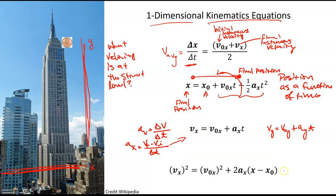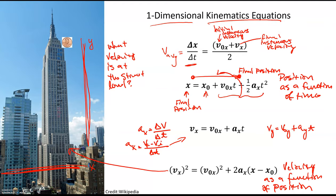The last equation is velocity as a function of position — there's no time in this equation, so in problems where you're not given any information about time, this can be a useful equation to apply. It's actually something you can use to solve the penny problem: if you know the height of the building, which is the change in position, and you know you're starting from rest — just dropping the penny — all you need is the acceleration of the penny in the air to solve for the velocity at the ground. You'll get practice choosing which equation fits a given physical situation.